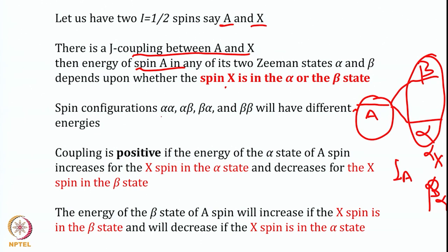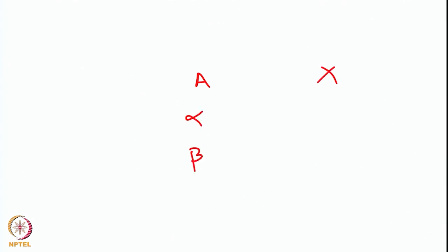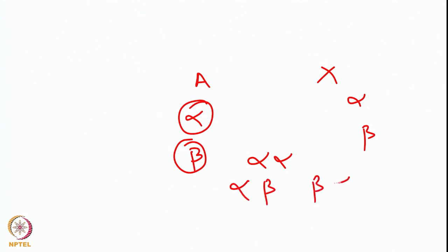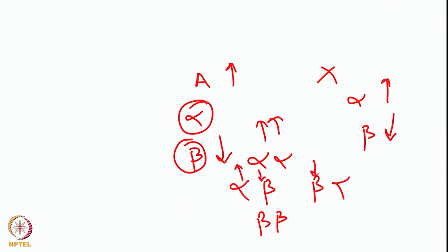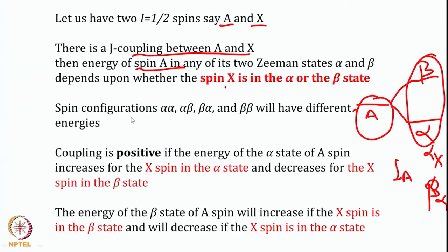There are two spins — spin A and spin X. Spin A has two states, alpha and beta, and similarly X spin has alpha and beta states. Because of this, four states are possible: alpha-alpha, alpha-beta, beta-alpha, and beta-beta. In vector terms, that is up-up, up-down, down-up, and down-down. All of these states will have different energy because spin A is not in isolation — it is coupled with spin X.